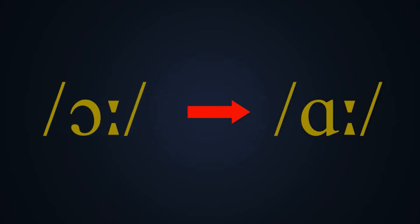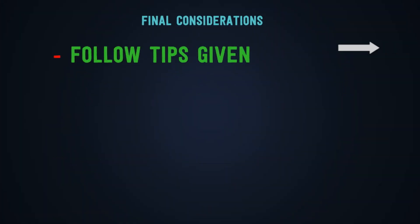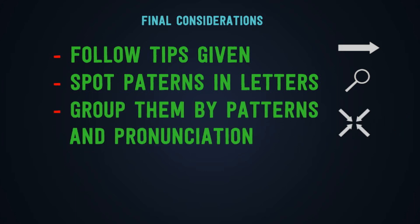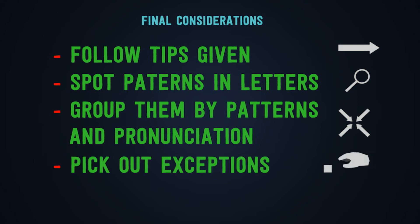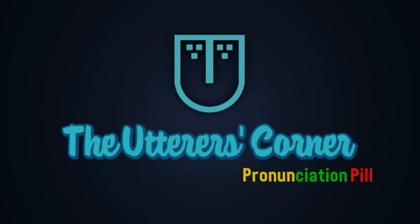Final considerations: follow these tips. If you start applying the steps we've been sharing in this video, it'll be easy to start pronouncing letter A correctly. Also, spot patterns in letters — try to remember all the different combinations that letter A has in order to group them by patterns and their pronunciation. Pick out exceptions — remember that every rule has an exception, and English is no different. Finally, practice — as always, practice makes perfect. Thanks for watching and listening, please follow us on Facebook and subscribe to our YouTube channel. Stay tuned for more, and we'll see you next time. Goodbye!